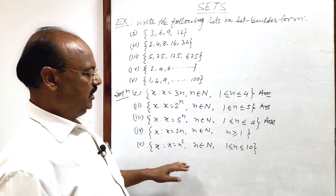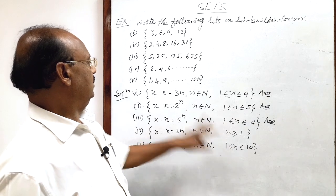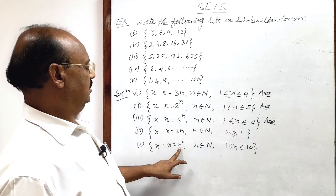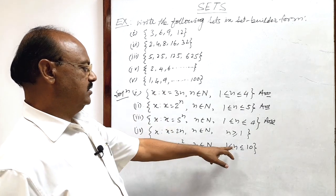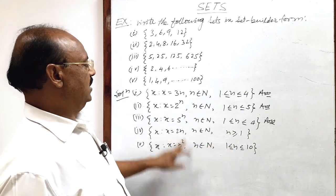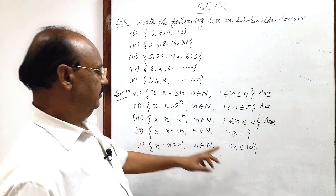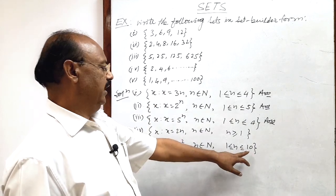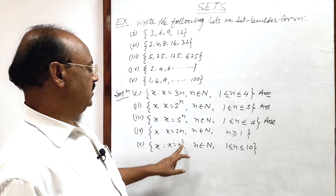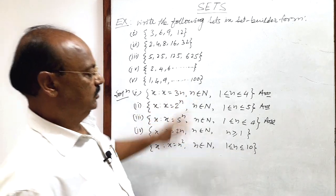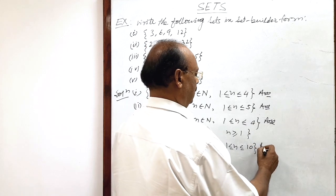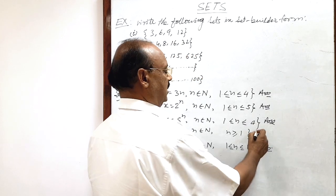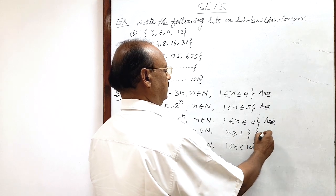You can check: if n is equal to 1, you get 1. If n is equal to 2, then 2 squared is 4. If n is equal to 3, then 3 squared is 9, and so on. If n is equal to 10, the upper limit, then 10 squared is 100. So this is the answer of the last part.